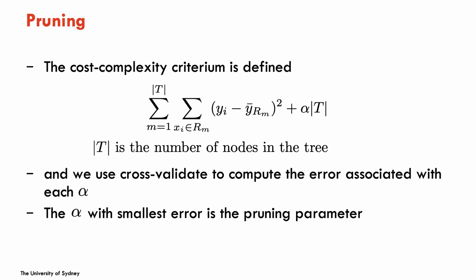The cost complexity criterion uses a similar idea to regularization and smoothing splines: penalization. We have the residual sum of squares of the tree and we want to minimize it, but penalized by the complexity of the tree. The complexity is captured by T — the number of terminal nodes — where more nodes means a more complex tree. The penalization is tuned by the parameter alpha, and as before, we use cross-validation to find the best alpha, which indicates how much pruning to apply.